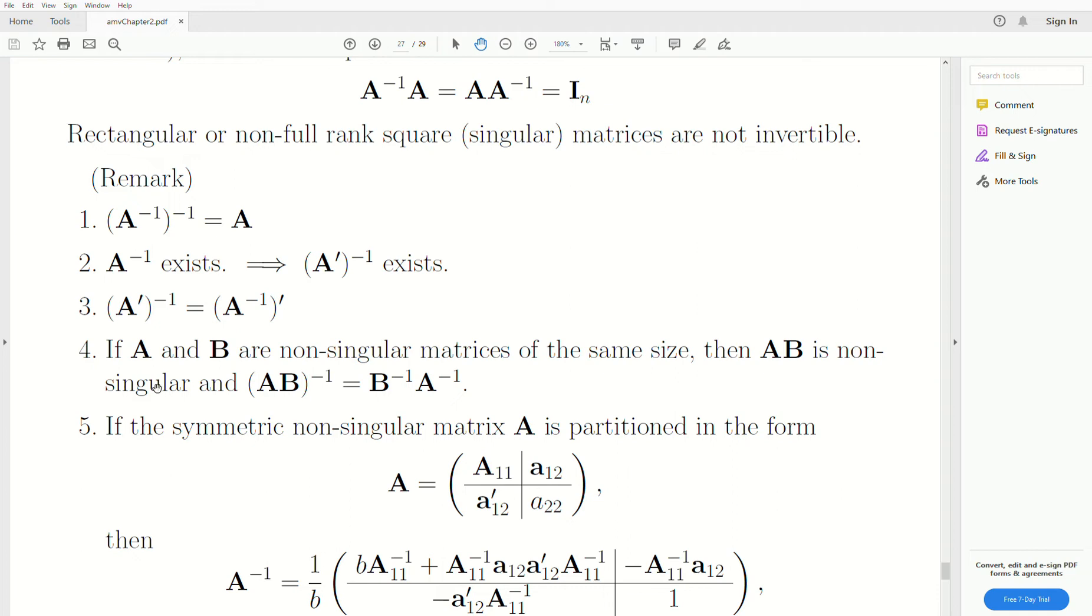If we have two matrices that are non-singular matrices, once you see non-singular, you know that these are invertible. So an A inverse exists and a B inverse exists, then the matrix product A times B is non-singular and it can be found as this. So AB inverse is thought of as B inverse, A inverse.